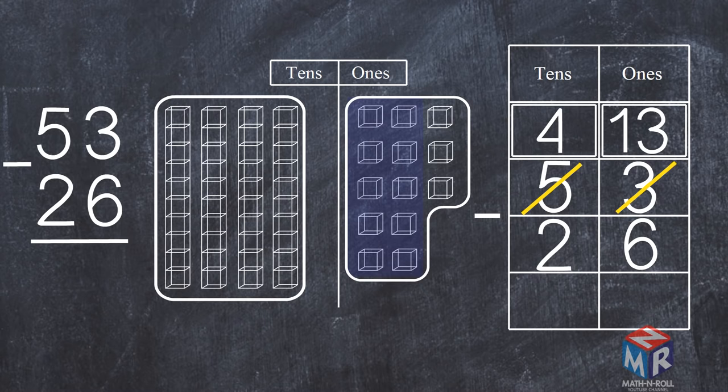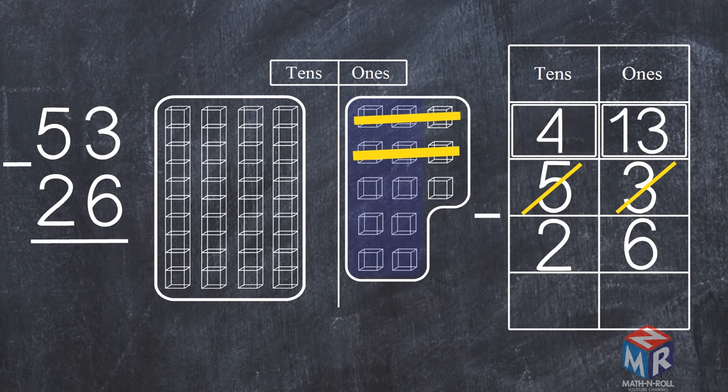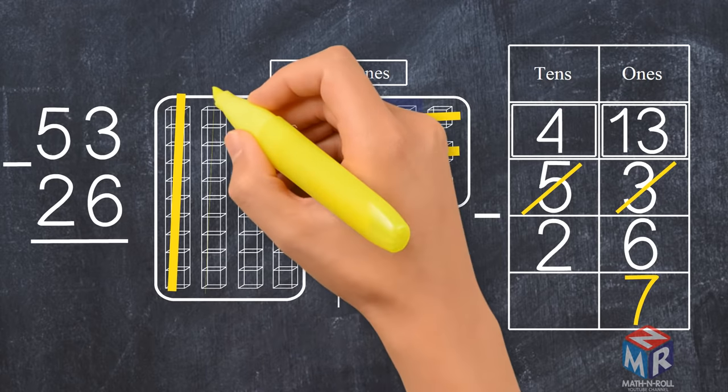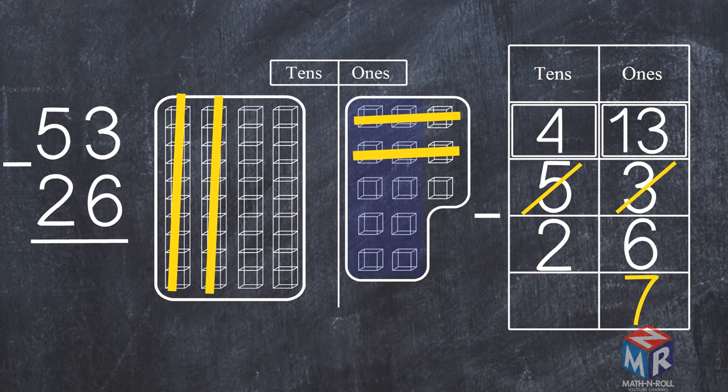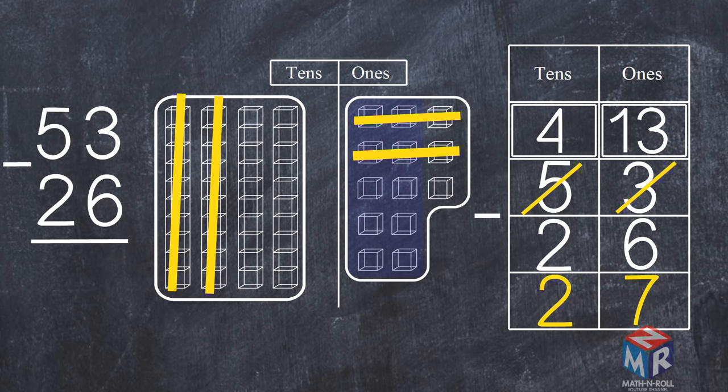Then we subtract the ones. 13 minus 6 is equal to 7. Next we subtract the tens. 4 minus 2 is equal to 2. So 53 minus 26 is equal to 27.